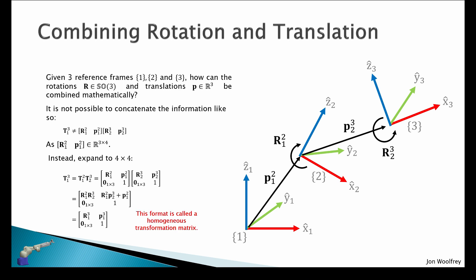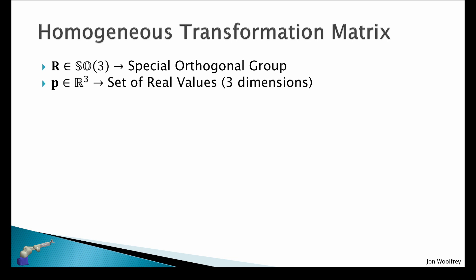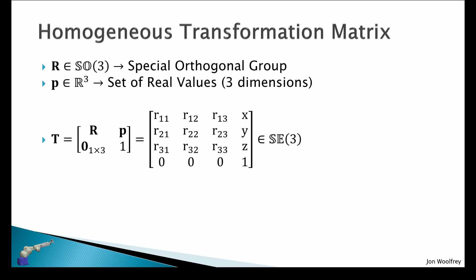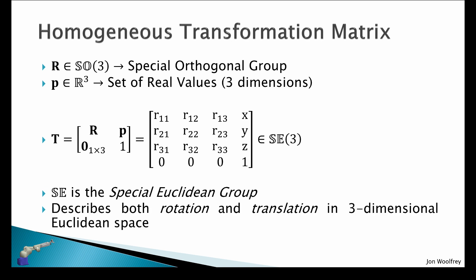This format is called a homogeneous transformation matrix. We have our rotation in the special orthogonal group in three dimensions, and we have our translation, which is a set of real values in three dimensions. When we combine them like so, we have the rotation component here — which is a three by three matrix — and our translation component, which is a three by one vector. To make this a four by four matrix where the mathematics works out, we put zero, zero, zero, one on the bottom row. We say that this is in the special Euclidean group, and this describes both rotation and translation in three-dimensional Euclidean space.